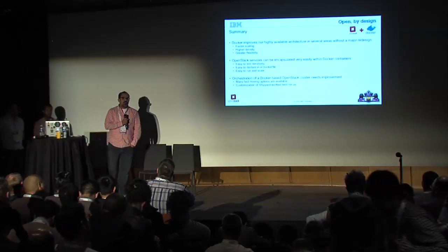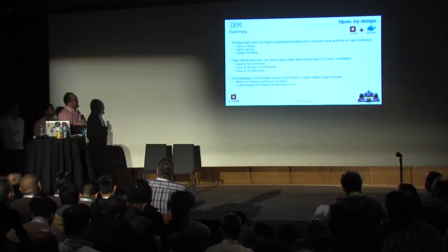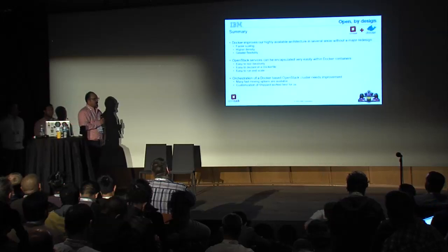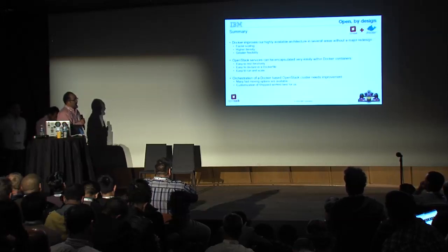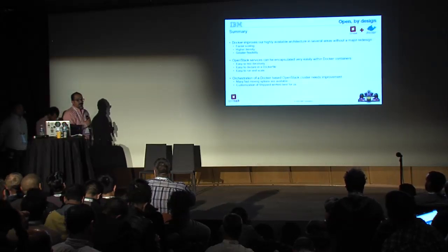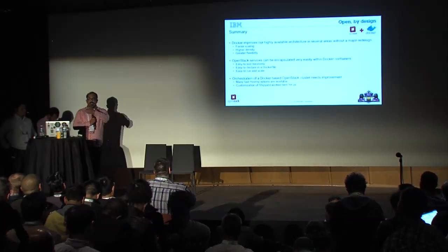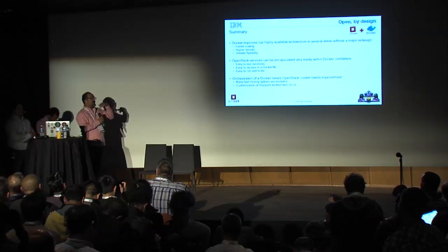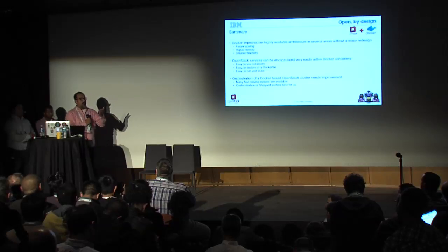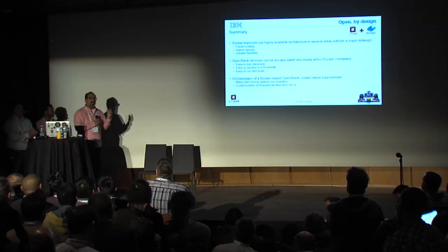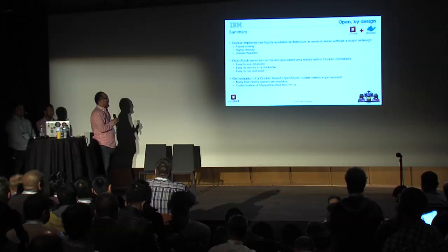A remaining challenge is Docker orchestration. They needed to add custom code to Shipyard to make it do what was required. The good news is this is a very fast-moving area — in fact, from when they started making changes to Shipyard, the community moved from Python to Go, so their customizations couldn't even be submitted back. Just like OpenStack, the Docker ecosystem is moving really fast, and the variety of orchestration tooling available is all really interesting.